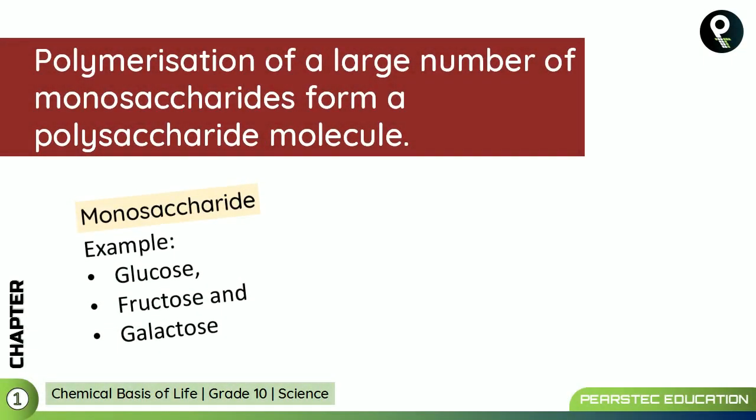Polymerization of a large number of monosaccharides forms a polysaccharide molecule — that is how polysaccharides are made. Many monosaccharides come together, joining together and forming polysaccharides. Remember: we already learned that two monosaccharides form disaccharides, and many monosaccharides form polysaccharides.